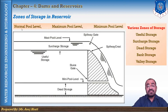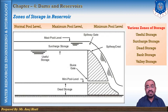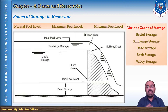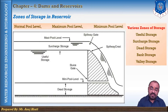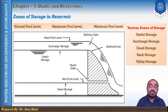The last one is the valley storage. The minimum volume of water which flows through a river before the construction of a dam is known as the valley storage. After the reservoir is formed, the storage will increase, and the actual rate of increase in storage will be equal to the storage capacity of the reservoir minus the natural valley storage. So the valley storage does reduce the effective storage capacity of a reservoir.